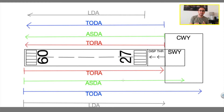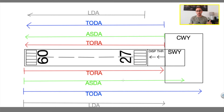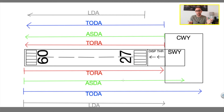Not all runway directions have clearways, stopways and displaced thresholds. So if you have an airport without clearways, for example, your distance is going to be reduced. Now let's jump into the declared distances.